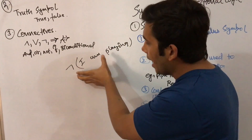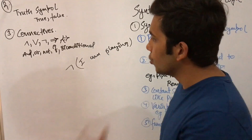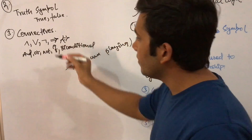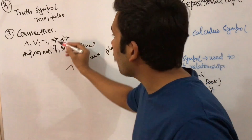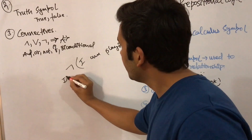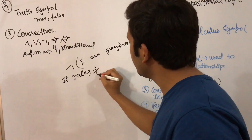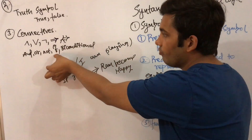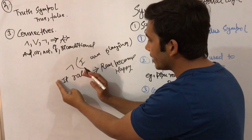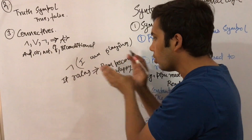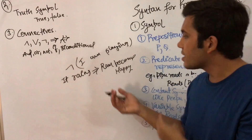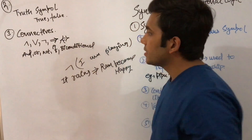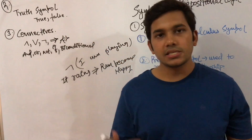The IF connective is used when there are two dependent conditions. For example, 'if it rains then Ram becomes happy' can be written as: it rains implies Ram becomes happy. This means only if it rains will Ram become happy — it is not the case that Ram becomes happy even when it is not raining.